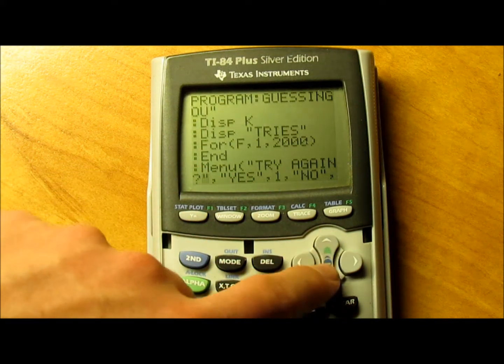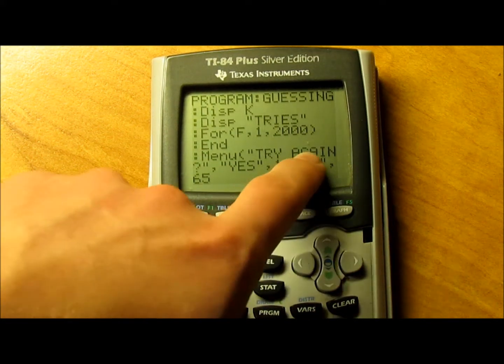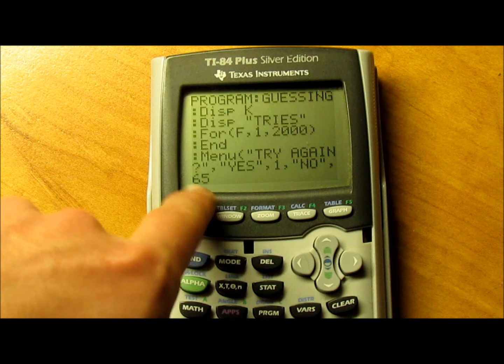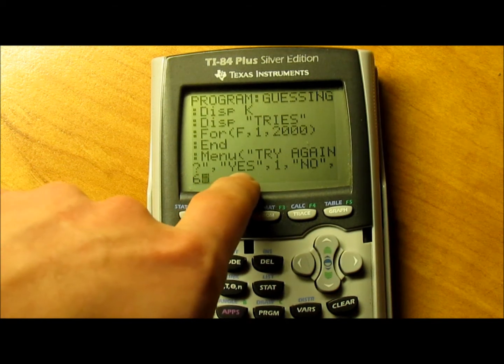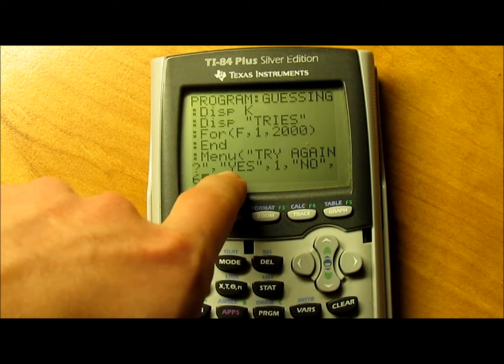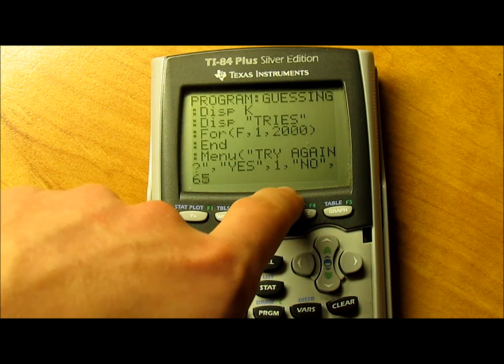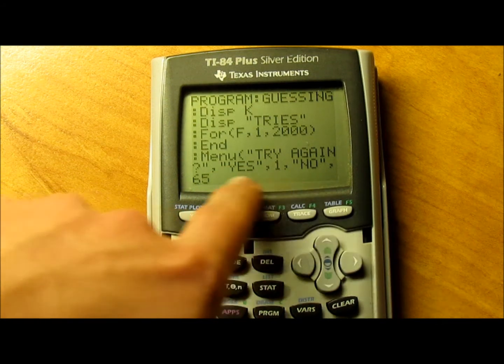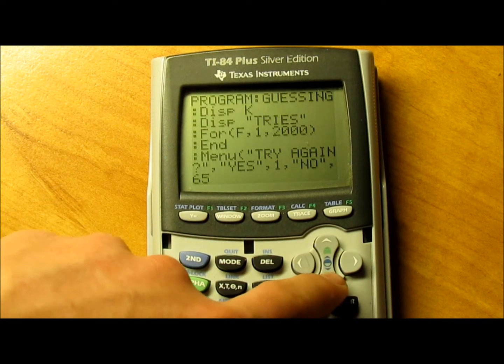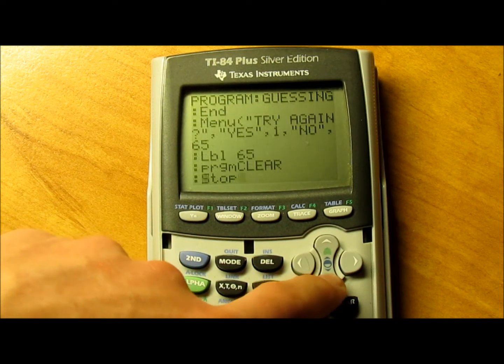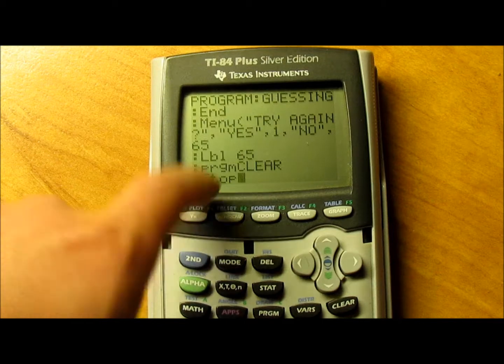Then you'll need to pull up menu. Try again question mark in quotations, comma yes in quotations, comma 1, comma no in quotations, comma 65. Don't know why I picked that number. Then label 65, program clear, and stop.